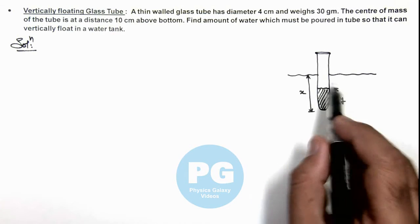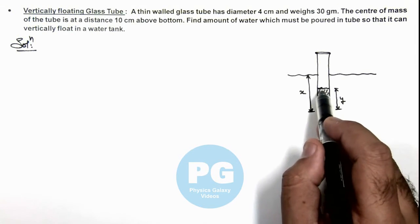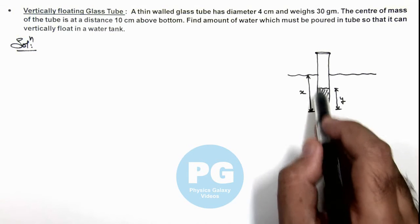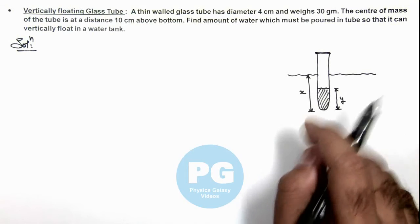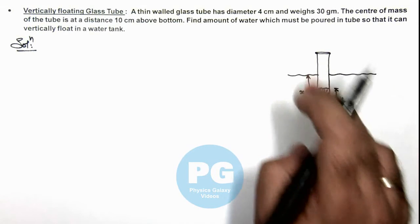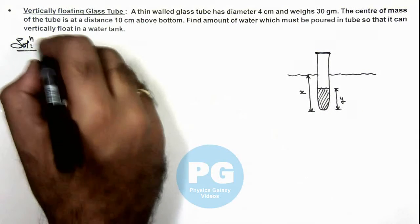So the center of mass of this tube plus the water inside must coincide or will be below the point x by 2. Otherwise the tube will become horizontal due to the torque applied by buoyancy force and the force of gravity. So in this situation here we can say.